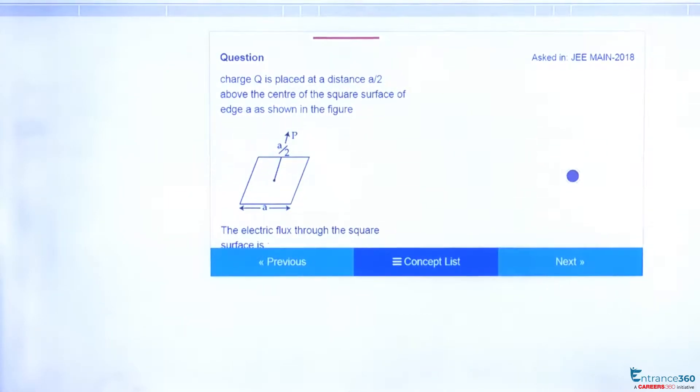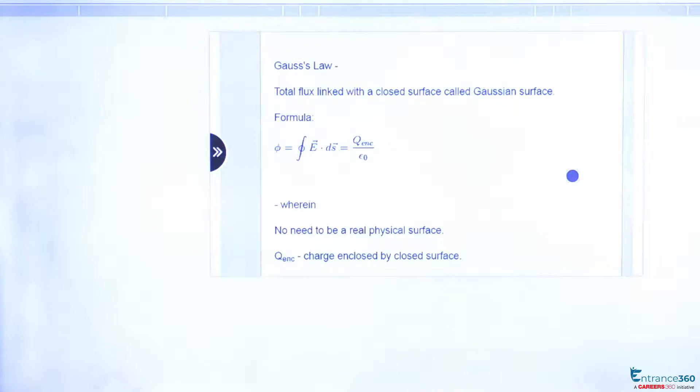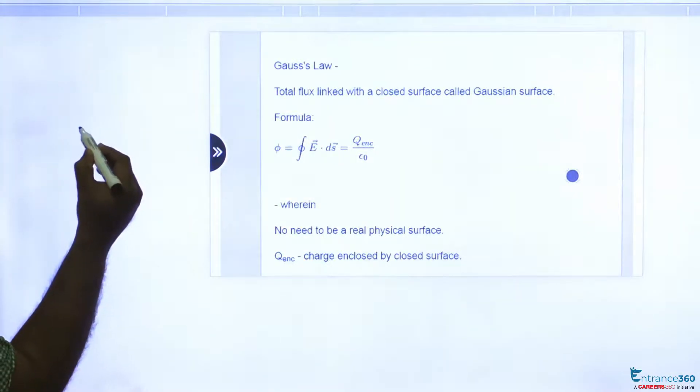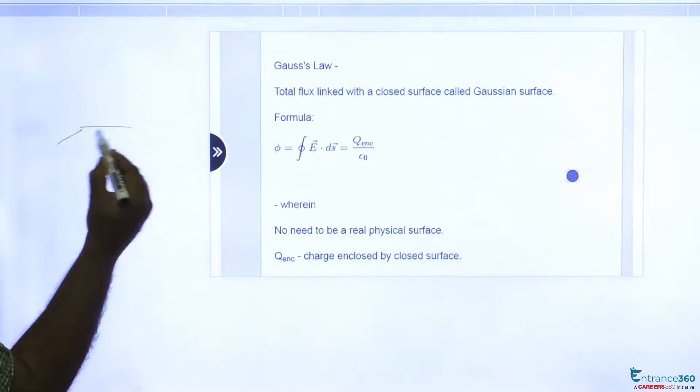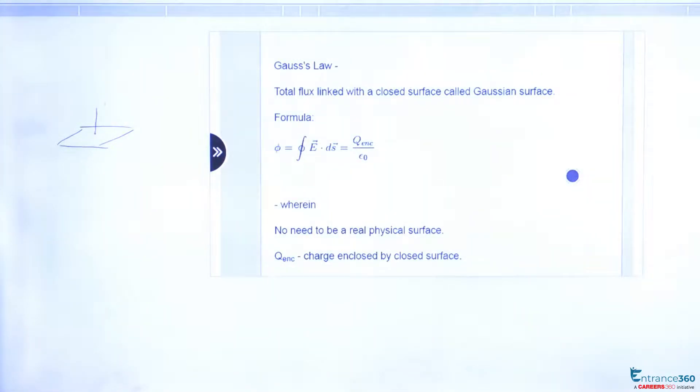We have to find the electric flux through the square surface. These are the options given, so we can proceed with Gauss's Law. Let's see how to proceed. We have a square surface, and it is given that